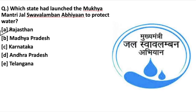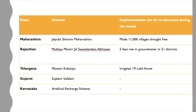Why is this scheme important? Recently, Narendra Modi appreciated five states for implementing unique initiatives to promote and conserve water. Maharashtra launched Jalayukt Shivar, and Rajasthan launched the Mukhya Mantri Jalswavalambhan Abhiyan.